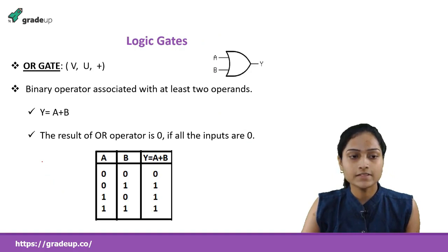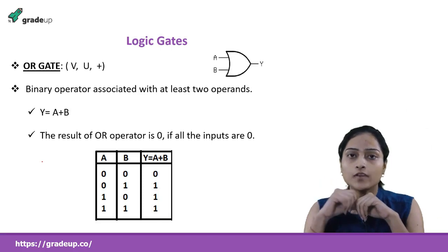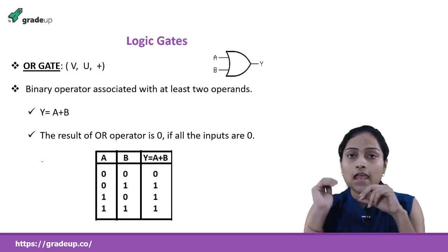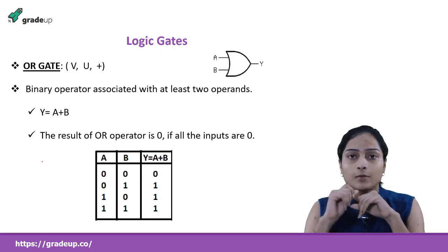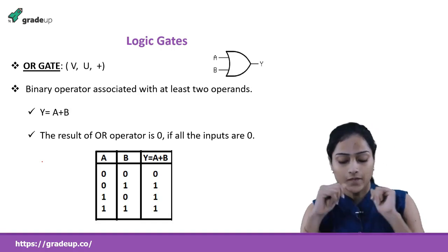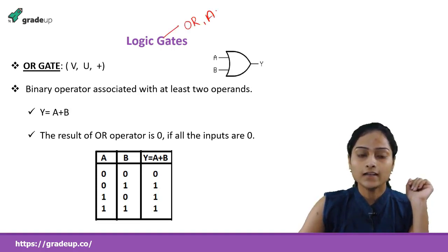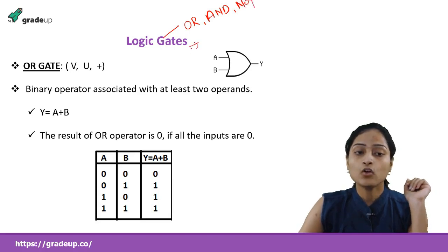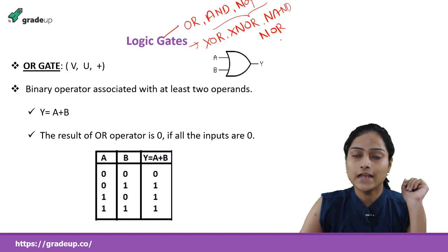We are going to design our hardware system using logic gates. Basically there are three basic logic gates: OR, AND, and NOT. All the remaining gates — XOR, XNOR, NAND, and NOR — are derived using these basic logic gates. So OR, AND, and NOT are the basic logic gates, and the others are known as derived logic gates.